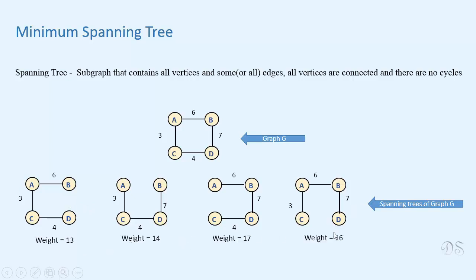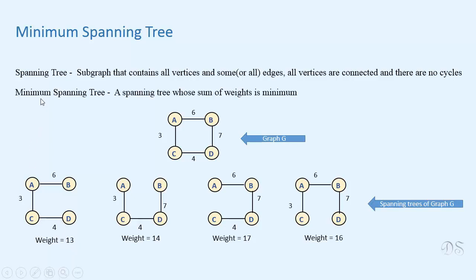These are the weights of these spanning trees. These weights are the sum of weights of edges included in the tree. For example, for this tree, weight is equal to 6 plus 3 plus 4, equal to 13. Now a minimum spanning tree of graph G is a spanning tree whose weight is minimum among all the spanning trees of G. For example, for this graph, this is the minimum spanning tree as its weight is minimum.